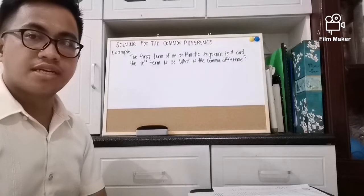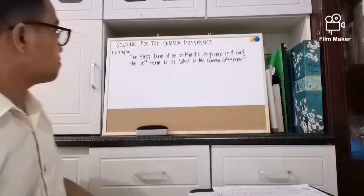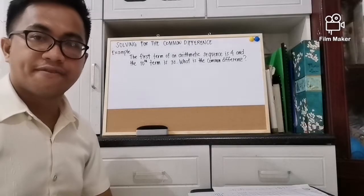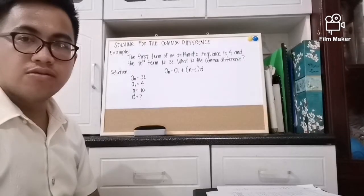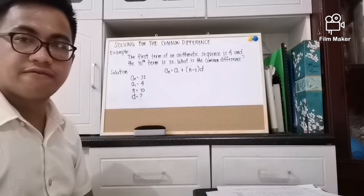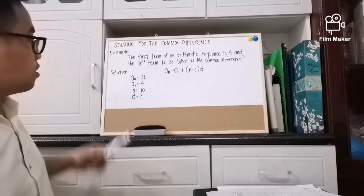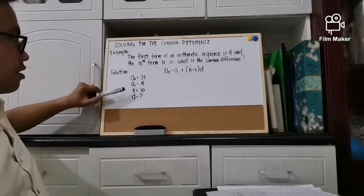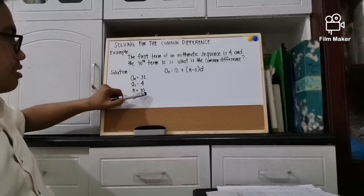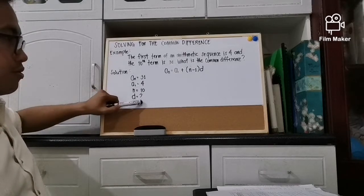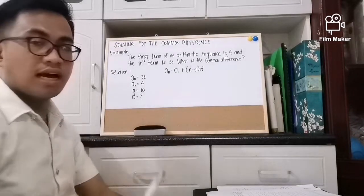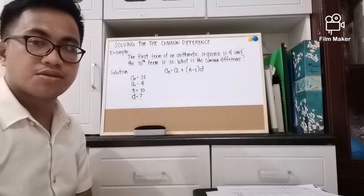Now, how about if you are asked to solve for the common difference when the nth term is given? Example: the first term of an arithmetic sequence is 4 and the 10th term is 31 — what is the common difference? To solve that, first we write the given: nth term is 31, first term is 4, n is 10, and the common difference is unknown. We still use the same formula and substitute the given.